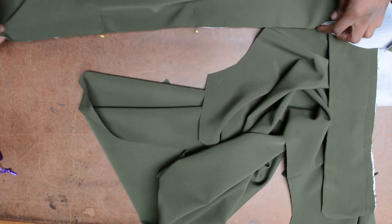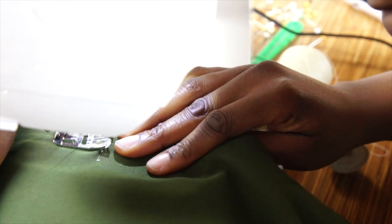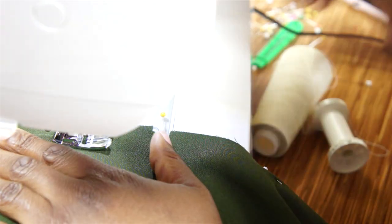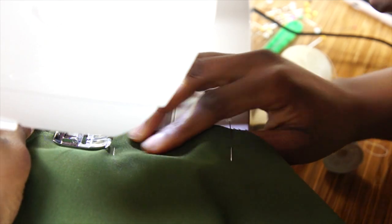Once that is done it is again time to head to your sewing machine sewing a 5/8 of an inch. You want to start at the collar and make your way down, and then start again at the collar and make your way down on the other side.